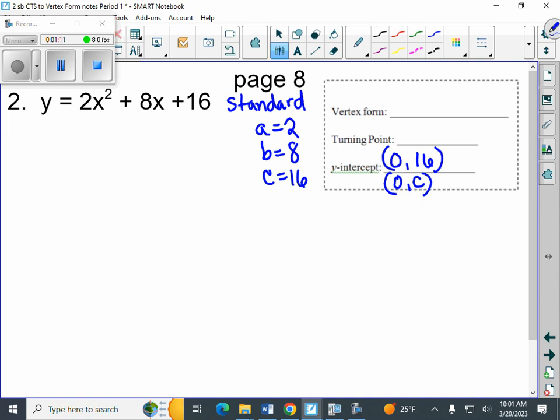And our steps on page 7 tell us to start with moving the 16 over to the other side. So when we move the 16 over, it's a personal preference. I'm going to write negative 16 plus y. There is nothing wrong with you writing y minus 16. So personal preference. Negative 16 plus y equals 2x squared plus 8x.